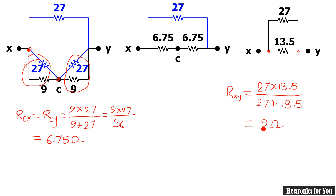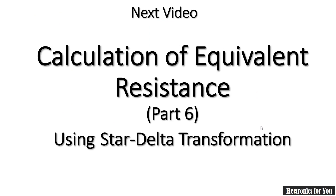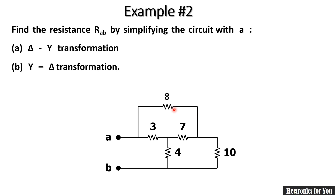Both methods — delta-to-star and star-to-delta — give the same answer of 9Ω between X and Y, confirming our solution is correct. In the next video, part six, I will again explain calculation of equivalent resistance using star-delta transformation, but the problem will have resistances of different values instead of all equal 9Ω. Keep watching, thank you.